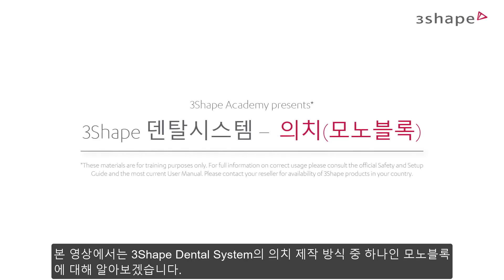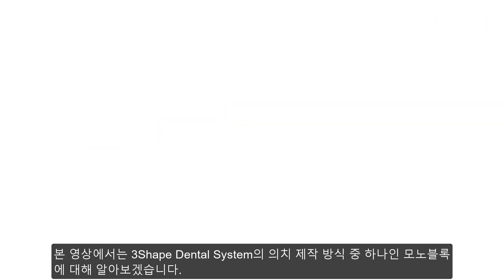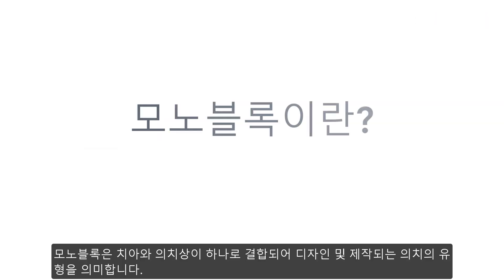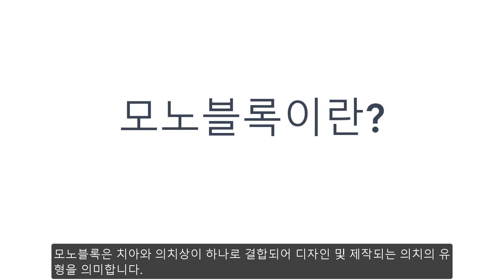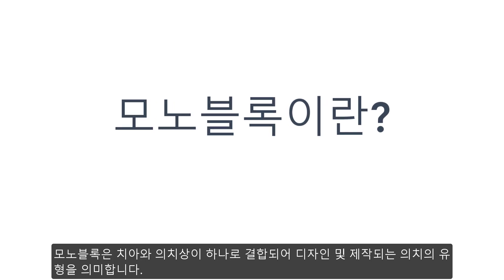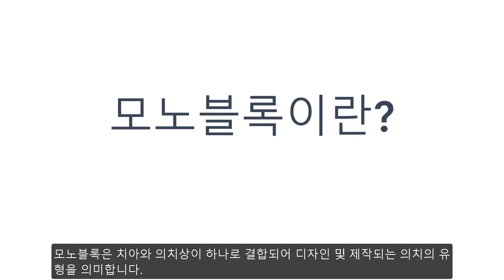In this video, we will introduce you to the monoblock, which is one of the assembly types when producing dentures in the 3Shape dental system. A monoblock is a type of denture restoration which is designed and produced as one piece, meaning the base and the teeth are combined.